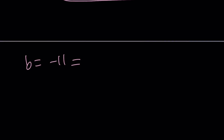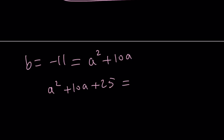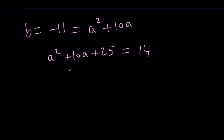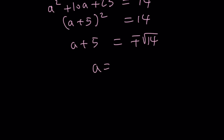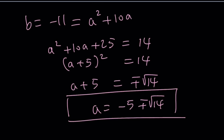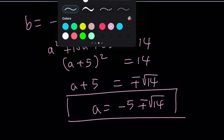There were two values for B; the other one is negative 11. So if B equals negative 11, and B is a squared plus 10a, we do the same thing: add 25 to both sides. This time we get 14 on the other side. This becomes a plus 5 squared equals 14. Square rooting gives us a plus 5 equals plus or minus the square root of 14, and finally a equals negative 5 plus or minus the square root of 14. Those are the other two solutions, so we have four solutions total because we're dealing with a quartic equation.